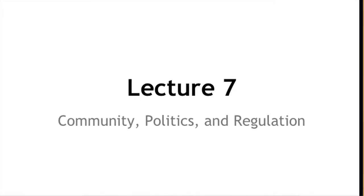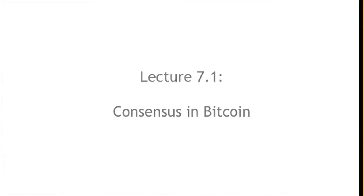Welcome to Lecture 7. In this lecture, we'll talk about all the ways that the world of Bitcoin and the technology touches the world of people. We'll talk about the community, we'll talk about politics within Bitcoin and the way that Bitcoin interacts with politics, and we'll talk about law enforcement and regulation issues. In Lecture 7.1, we'll talk about consensus in Bitcoin, the way that the operation of Bitcoin relies on the formation of consensus among people.